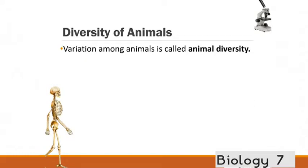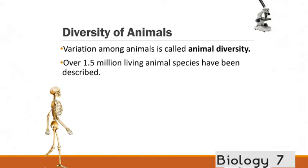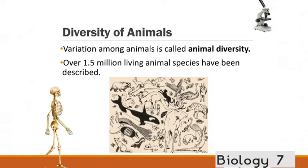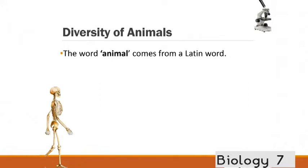Diversity of animals. So the variation among animals is called the animal diversity. And they vary in a lot of ways including size, shape, their behavior and many other characteristics. There's over 1.5 million living animal species which have been described and potentially many hundreds of thousands more that are yet to be described or may have previously existed on this planet. The word animal comes from the Latin word animale meaning vital breath or soul.